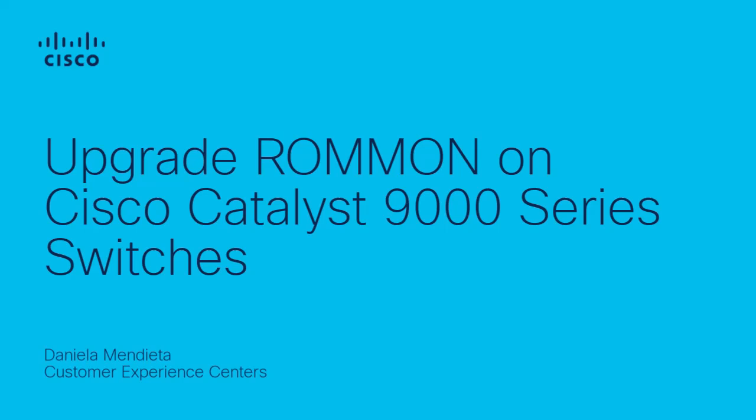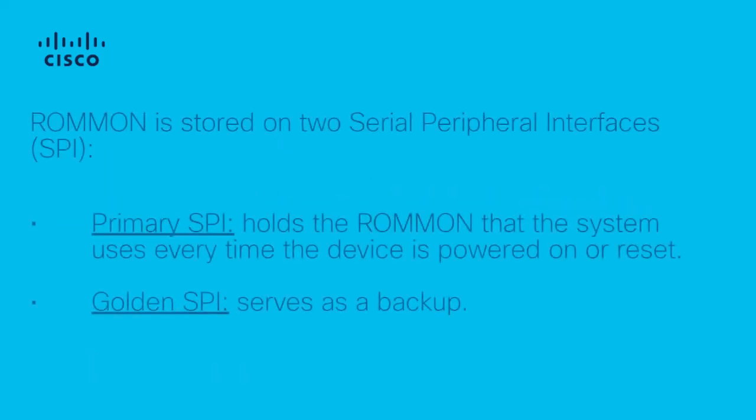First, let's understand what ROMMON is. The ROMMON, also known as the bootloader, is the firmware that runs when your device powers up or resets and boots the operating system software. ROMMON is stored on two serial peripheral interfaces: the primary and the golden. The primary SPI holds the ROMMON that the system uses every time the device is powered on or reset, while the golden SPI serves as a backup. If the primary gets corrupted, the system automatically boots from the golden SPI.